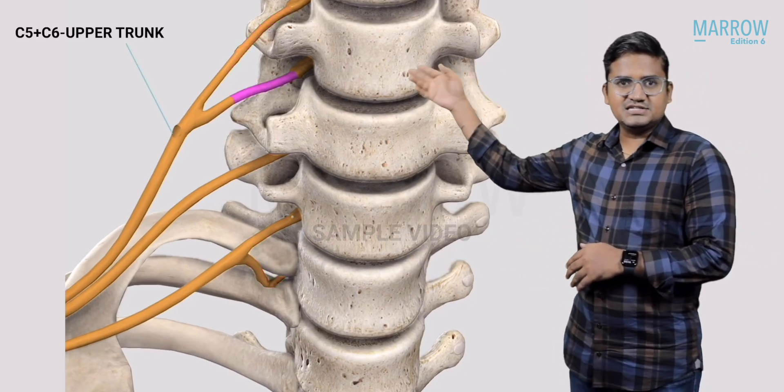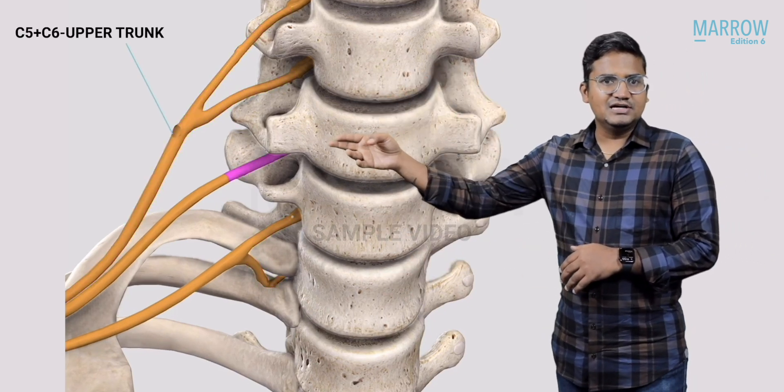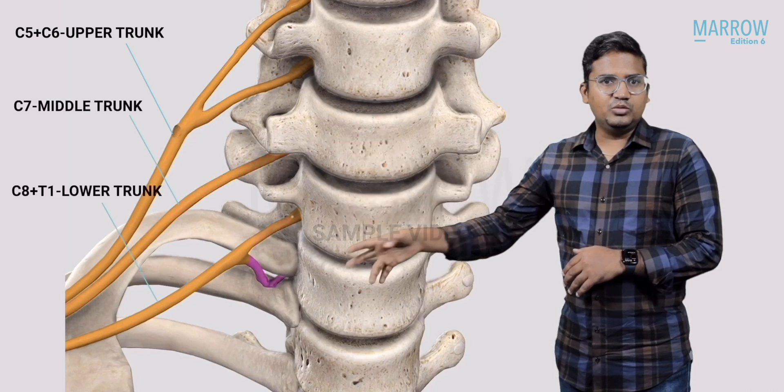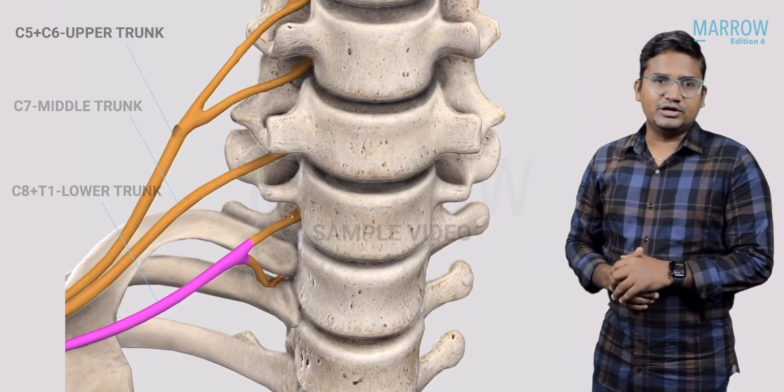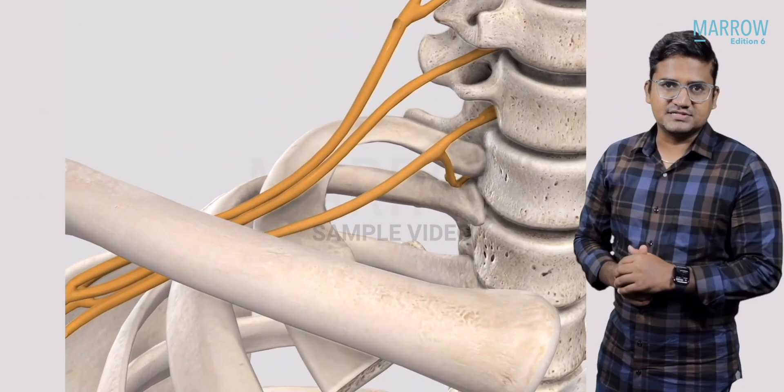C5 and C6 join together to form the upper trunk. C7 forms the middle trunk. C8 and T1 form the lower trunk. So we have three trunks.